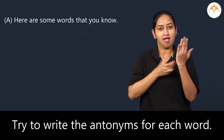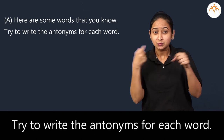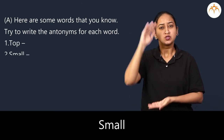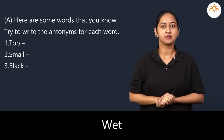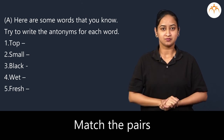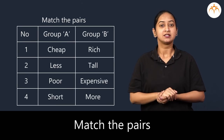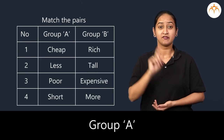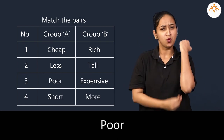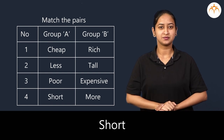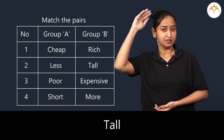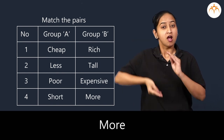Exercise: Here are some words that you know. Try to write the antonyms for each word: top, small, black, wet, fresh. Match the pairs — Group A: cheap, less, poor, short. Group B: rich, tall, expensive, more.